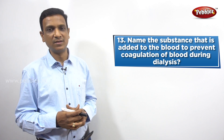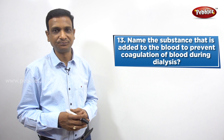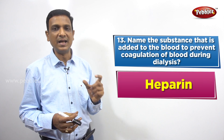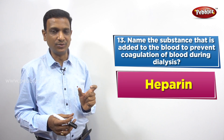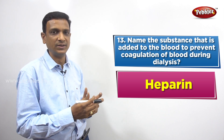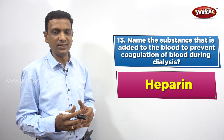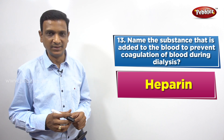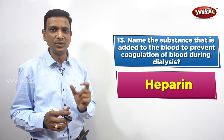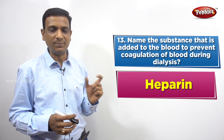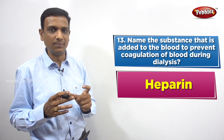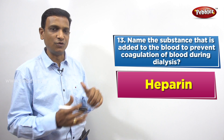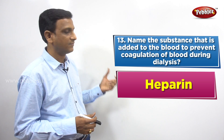To avoid that clotting, some substance is added to the blood during the dialysis procedure. The answer is heparin. Heparin is the substance that is added to the blood when it is drawn out of the body through an artery. It will prevent the clotting of blood in the tubes. Heparin is an anticoagulant — anticoagulants are used to stop blood from clotting. Once dialysis is done, the blood flows back into the body. So the answer is heparin.